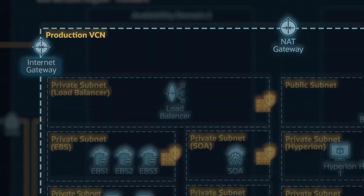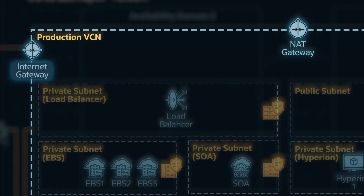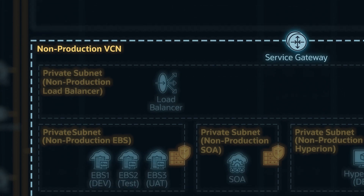So you have a bunch of nodes running E-Business Suite and some running Hyperion. How did you architect that in OCI, taking into consideration fault domains and availability domains? Primarily, we separate the production workload and the non-production workload in two VCNs.